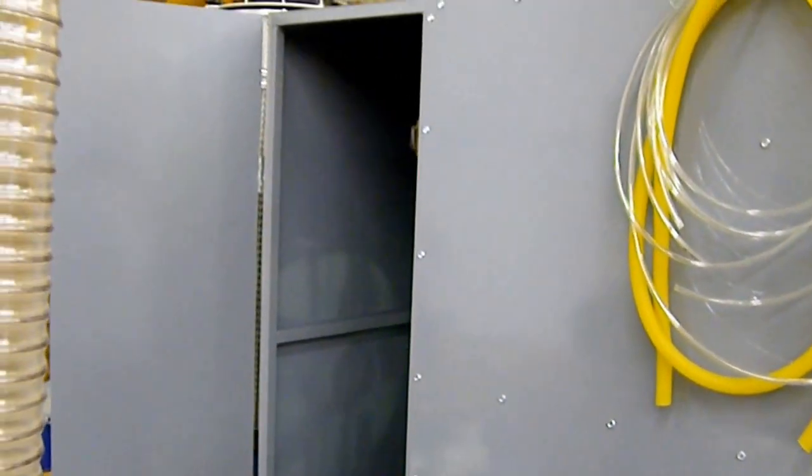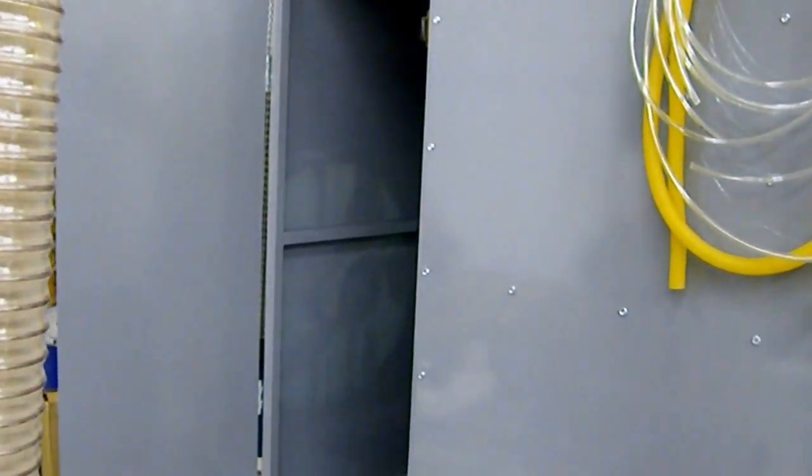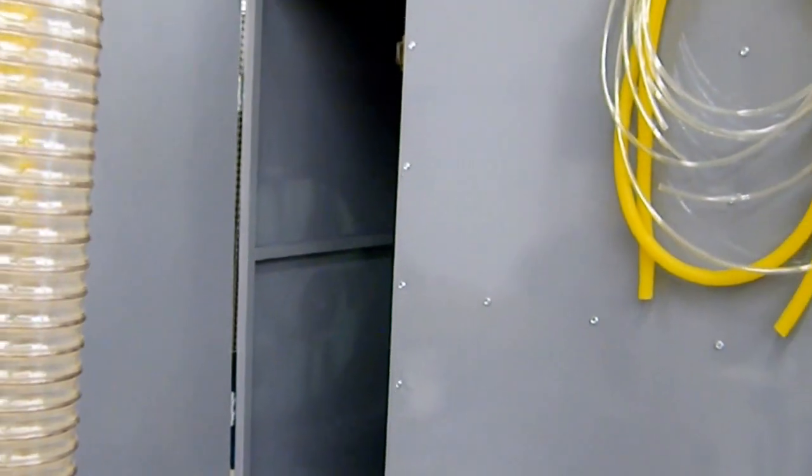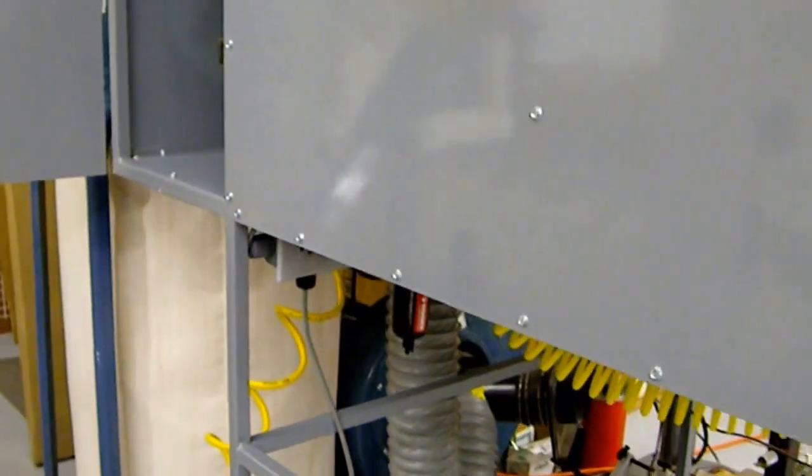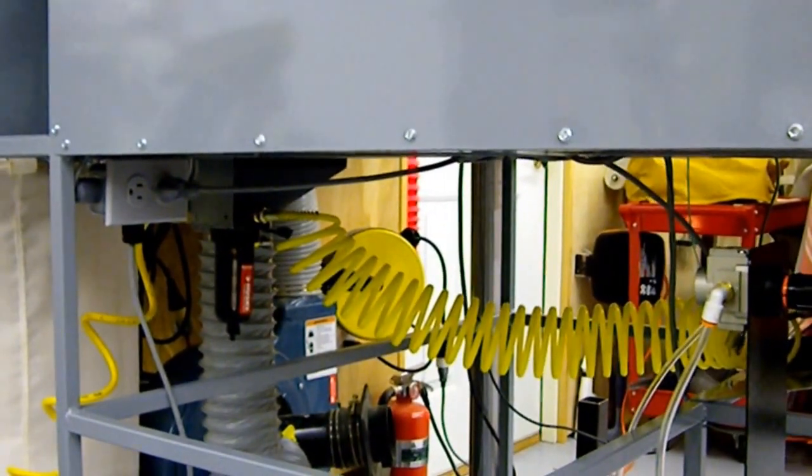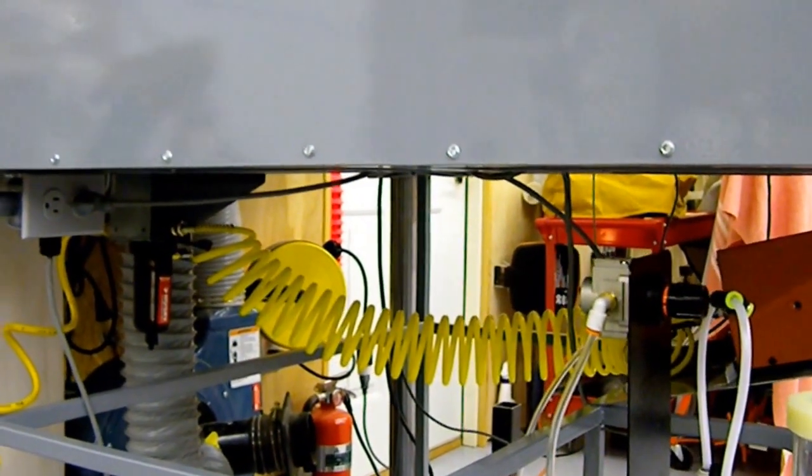On the back of the unit we have a door that provides access to our fan. And you can see from the bottom that we have a dryer for our input air line and then the coiled line going over to the control unit.